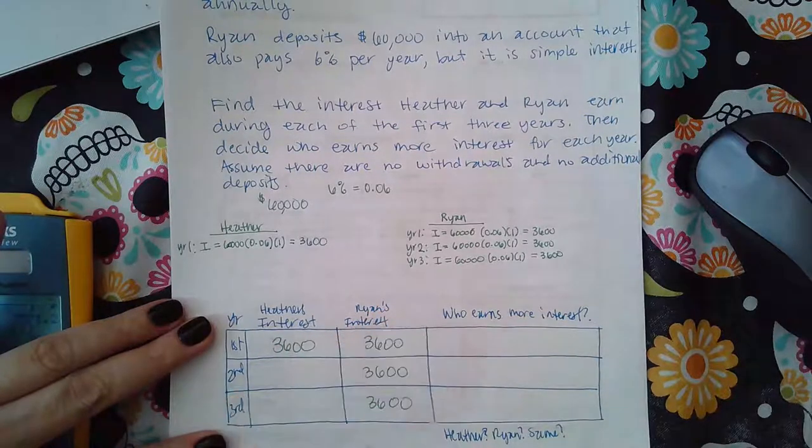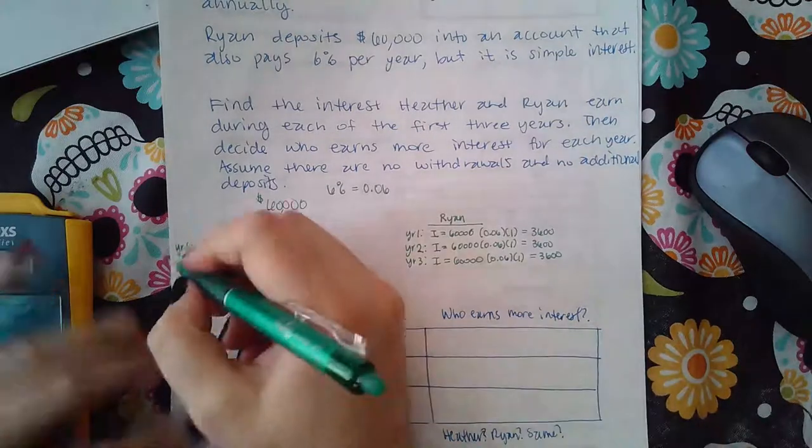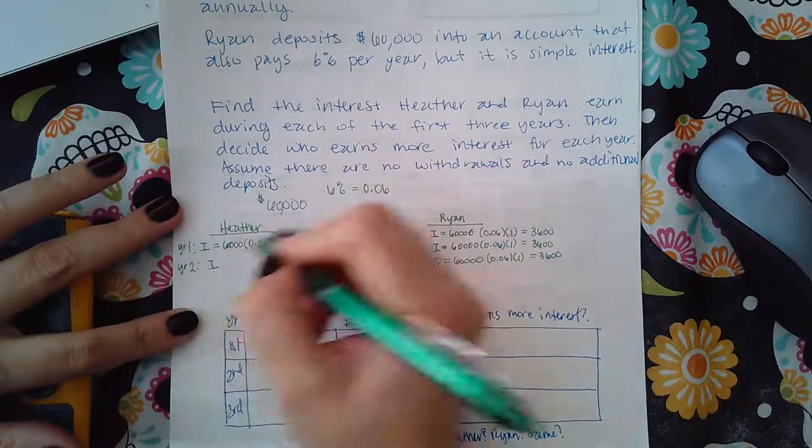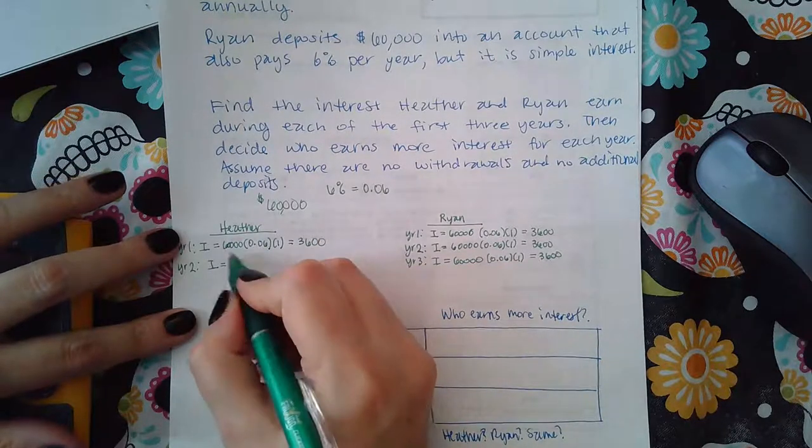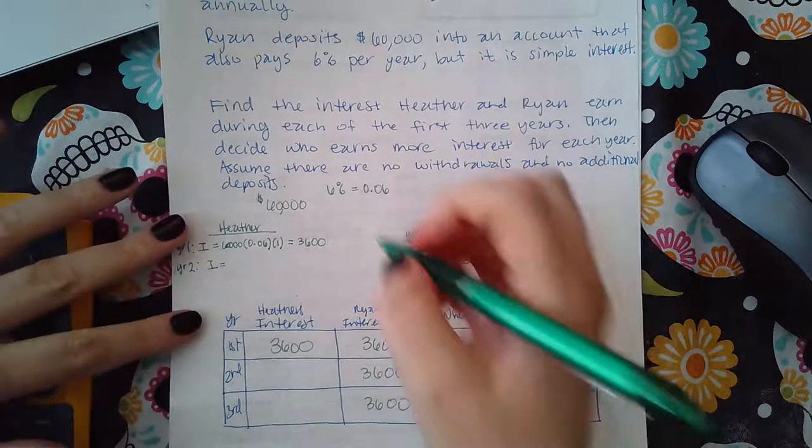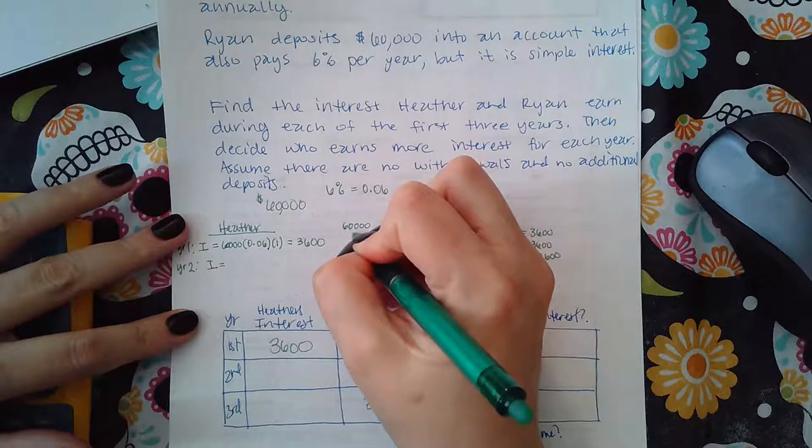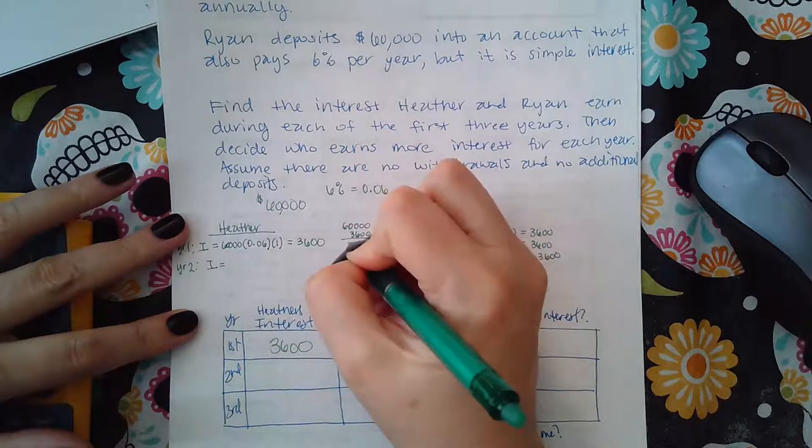So for Ryan it's going to be $3,600 every single year. For Heather, we know that the first year is $3,600 just the same as Ryan, but in year two is where things change because now in year two the principal amount that you start with is not the same as it was in year one.